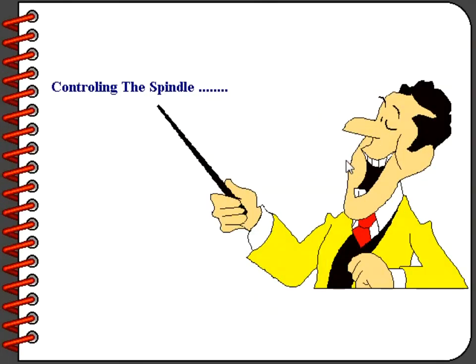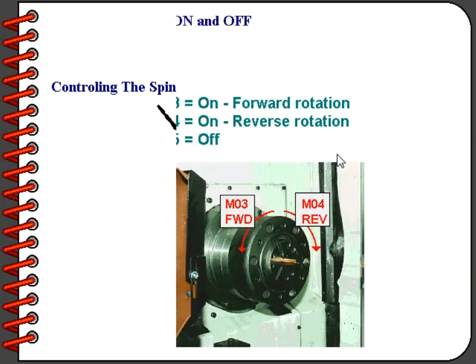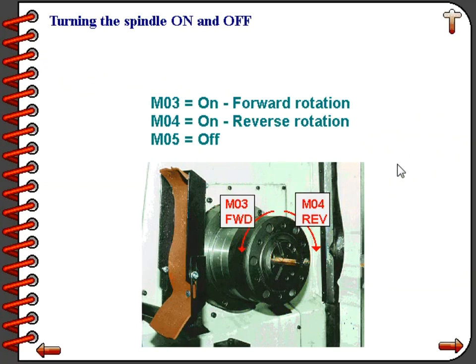Now let's take a look at all the fascinating things we can do with the spindle. As you view the spindle from the front, counterclockwise would be forward rotation and clockwise would be reverse rotation. To turn the spindle on is quite simple: M03 turns the spindle on in forward rotation, M04 turns the spindle on in reverse rotation, and M05 stops the spindle in either case.